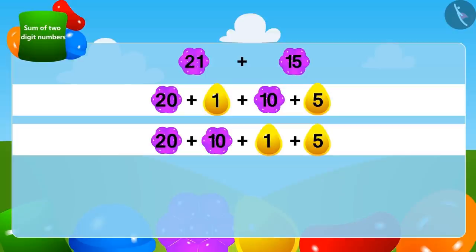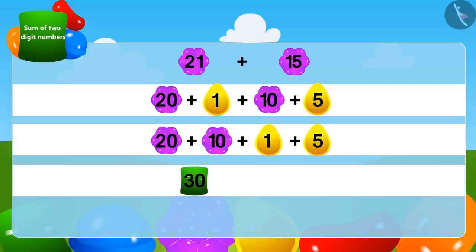Now we will add the two-digit numbers: 20 plus 10 equals 30. And now we add the one-digit numbers: 1 plus 5 equals 6.